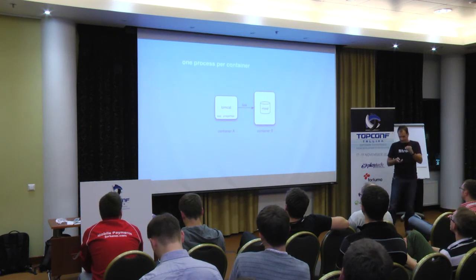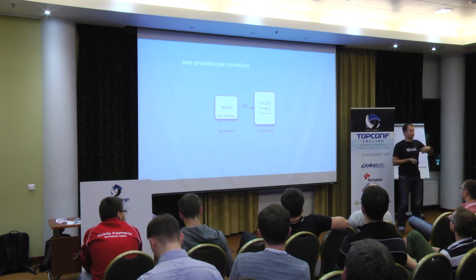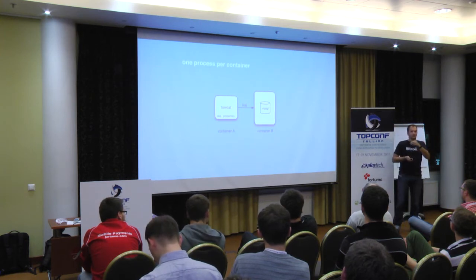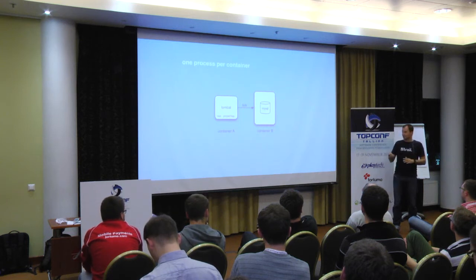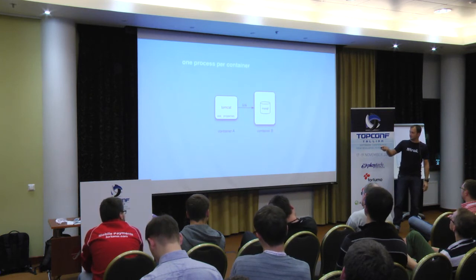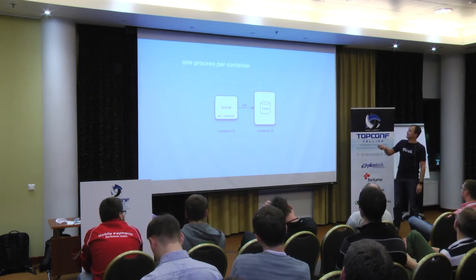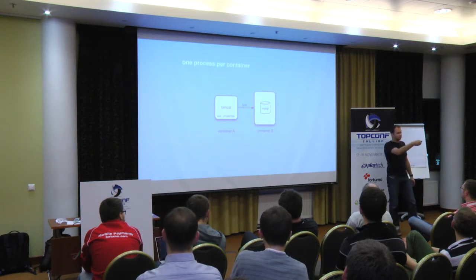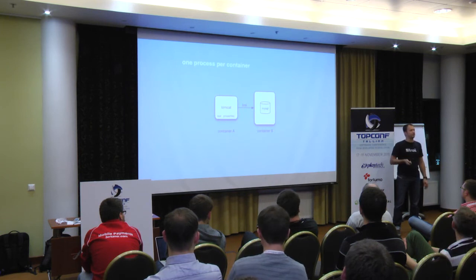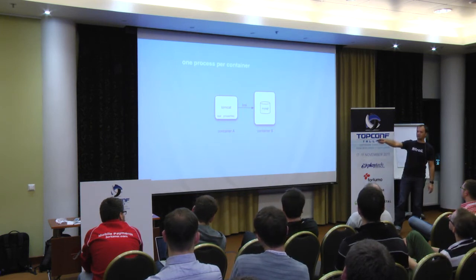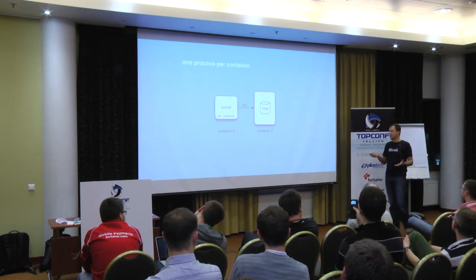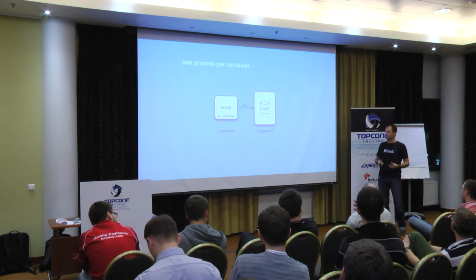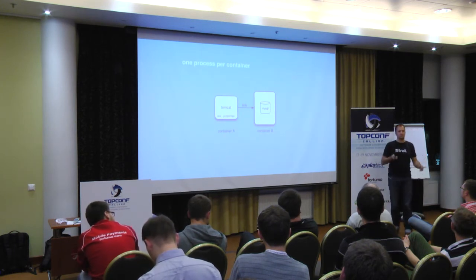When running containers, there is a rule: each container should only contain one process. You could circumvent that using some kind of supervisor, but that's not recommended. If you have an application running in Tomcat with a database, you run the database in one container and Tomcat in another, then link them together so the Tomcat container can talk to the MySQL database in the other container. You end up with two running containers for your application. We'll later see how you orchestrate that when you have a big application with multiple dependencies.